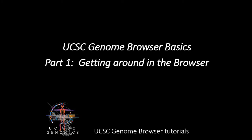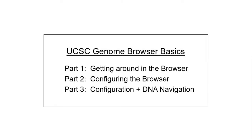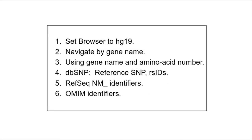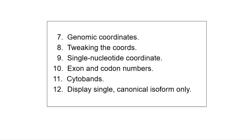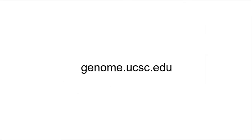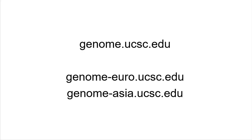Welcome to part one of the basic browser video series. We will focus primarily on the use of accession names and the many ways that identifiers of various kinds can be used to locate genomic locations and annotations. We will also show a few configuration options for setting up the browser. In the next installment, we will focus on more ways that the browser image can be configured to show the data the way you want. In part three, we will show you many more configuration options and also how you can use DNA sequences to navigate. In this part, we will deal mostly with navigation and how to get around in the browser.